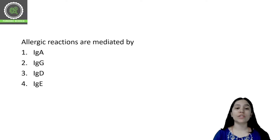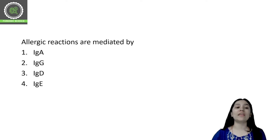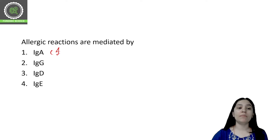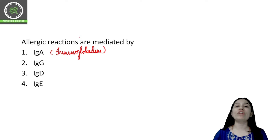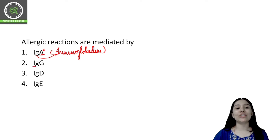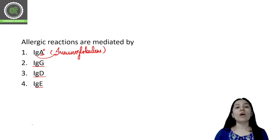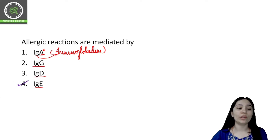Next question: allergic reactions are mediated by IgA, IgG, IgD, or IgE? The antibodies we call immunoglobulins. These immunoglobulins have several variants: IgA, IgG, IgD, and IgE. These are all immunoglobulin variants. We know that antibodies work as part of our body's immune system, and allergic reactions are mediated by the immunoglobulin IgE — that is the correct option for this question.